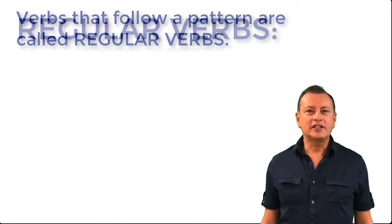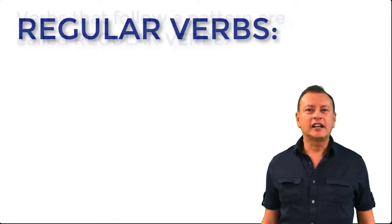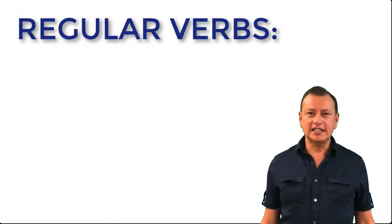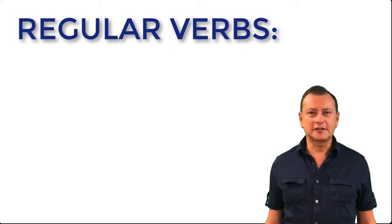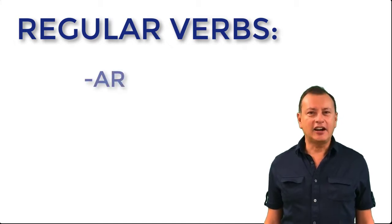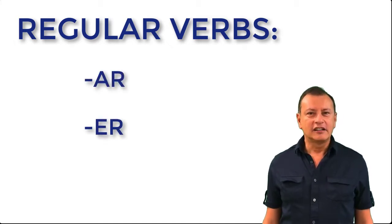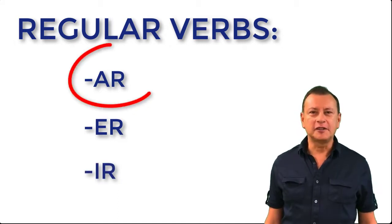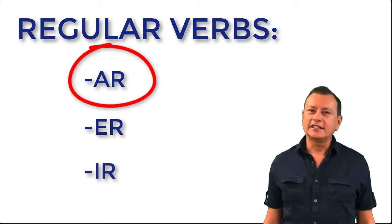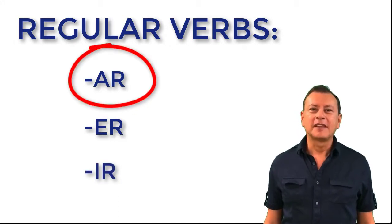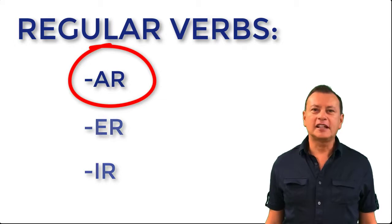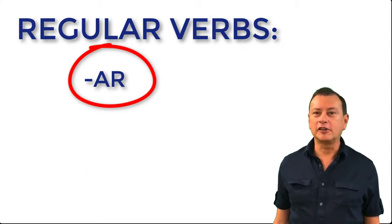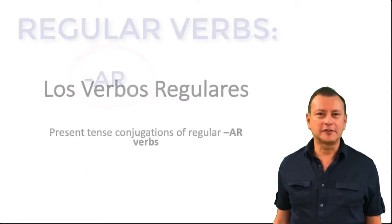Verbs in Spanish are classified according to the ending. There are three types of verbs: AR, ER, and IR verbs. Let's focus on the first group and study verbs that end in AR. They are called regular AR verbs.